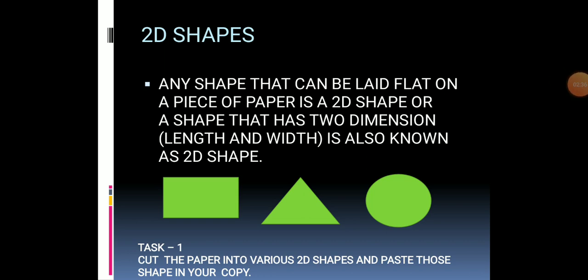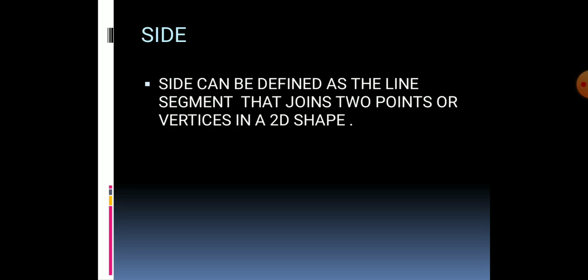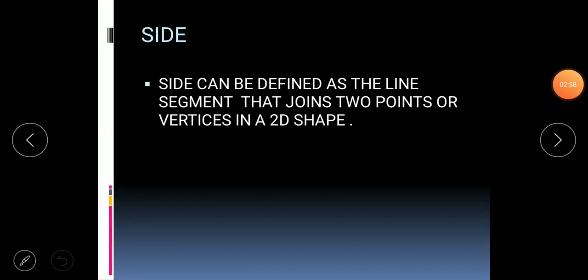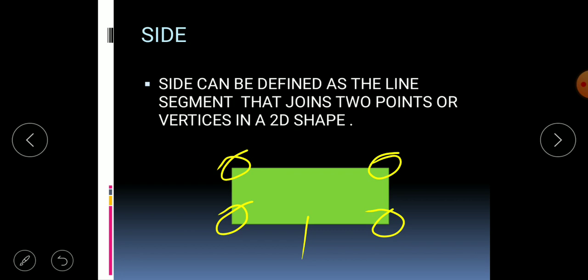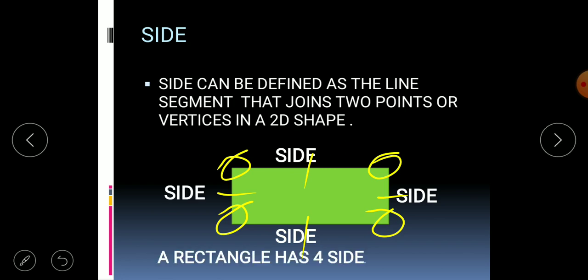Now let's find out the components that belong to 2D shapes. The first component is side. A side can be defined as the line segment that joins two points or the vertices of a 2D shape. For example, in a rectangle there are four points, and the line joining the nearest two points is known as a side. Counting the sides: one, two, three, four — a rectangle has four sides.